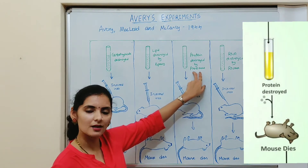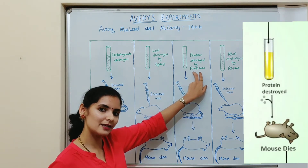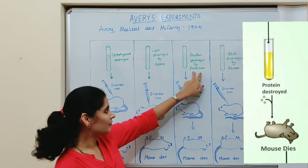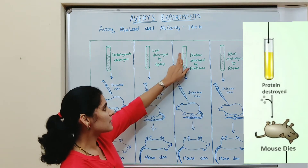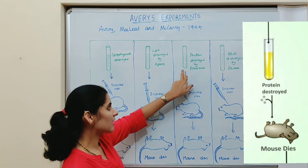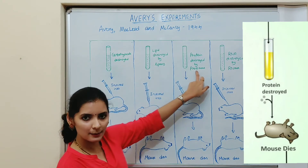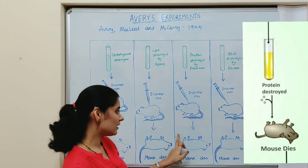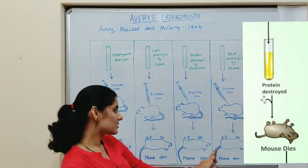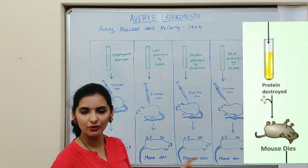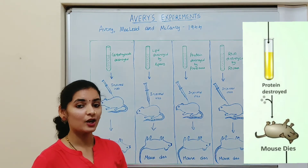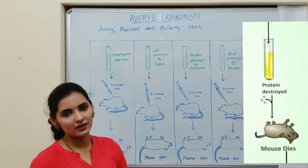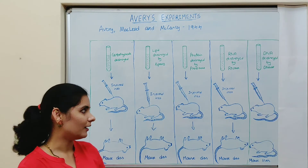In the third experiment, proteases — enzymes that digest proteins — were used. All proteins in the extract were digested by proteases, and the same procedure was performed. Again, the mouse died of pneumonia, which suggests that proteins are not the transforming principle.